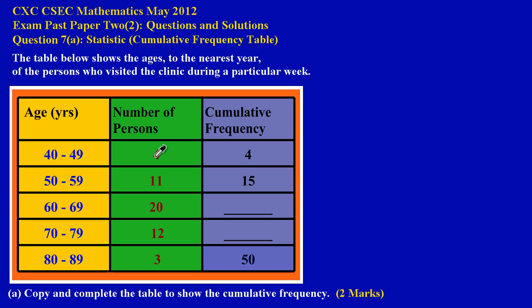Notice that the first value — the 4 in the number of persons column — is carried straight across into the cumulative frequency column. Then in the second row, the number of persons is 11, so they added 11 to the 4 above, giving 15. That's the trend we're going to use.